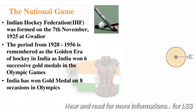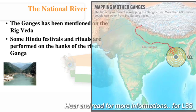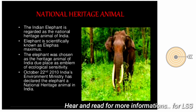Our national game is hockey. India's greatest hockey player Dhyan Chand's birthday is celebrated as National Sports Day. Our national river is the Ganga — the longest river of India with the most heavily populated river basin in the world, revered by Hindus as the most sacred river on earth. Our national heritage animal is the Indian elephant, adopted as national heritage animal in the year 2010.